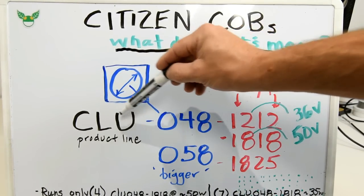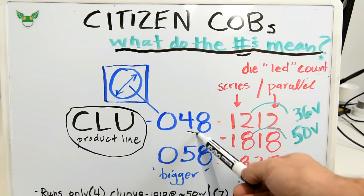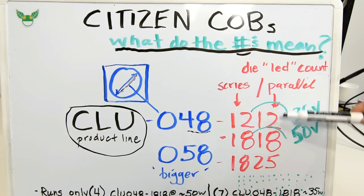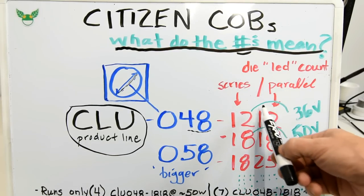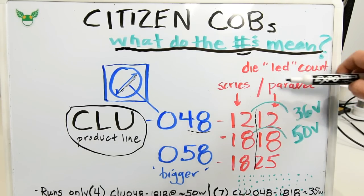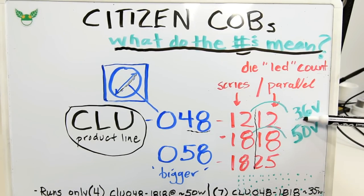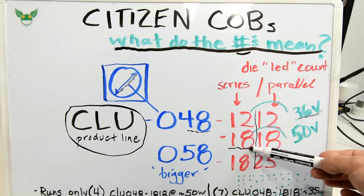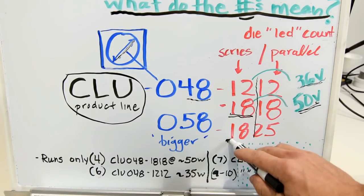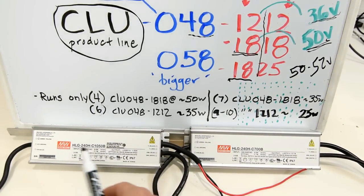This seems like a good time to talk about what Citizen means, what the numbers mean. Because Cree, they have their 36 volt, their 72 volt version. But with Citizen, you've got a lot more numbers. CLU is the line. That's the cob line. And the 048 or the 058 is the diameter. Then you have all these numbers that come after that: the 1212, 1818, and 1825. The first two numbers is how many LEDs are in series in this die of LEDs. A cob is 100 to 400 or 500 LEDs. So this particular LED should have 144 LEDs: 12 in series, 12 in parallel. And that gives us 36 volts. What ended up happening was, I guess I ordered the 1818s, which are a 50 volt cob, which exceeds the voltage that the driver has. The driver only has 238 volts. And I'm trying to run 300 volts for the cobs, and it just isn't working.